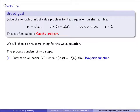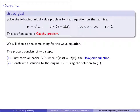The process for solving this initial value problem consists of two steps. First, we will solve an easier initial value problem where the initial function is the Heaviside function, also called the unit step function. Then we will construct a solution to the original initial value problem using our solution to this first part.